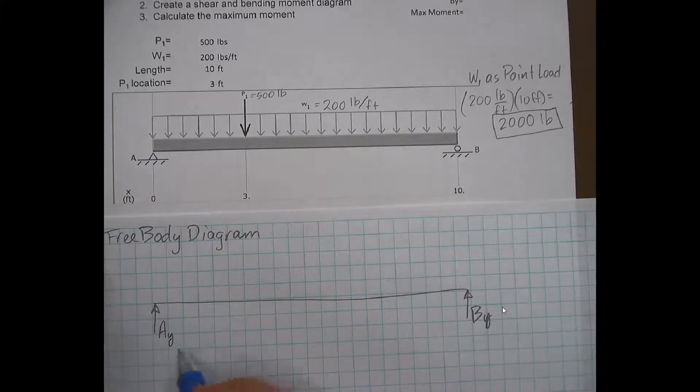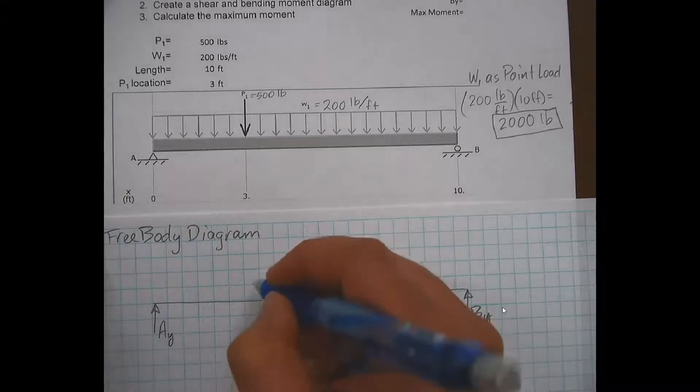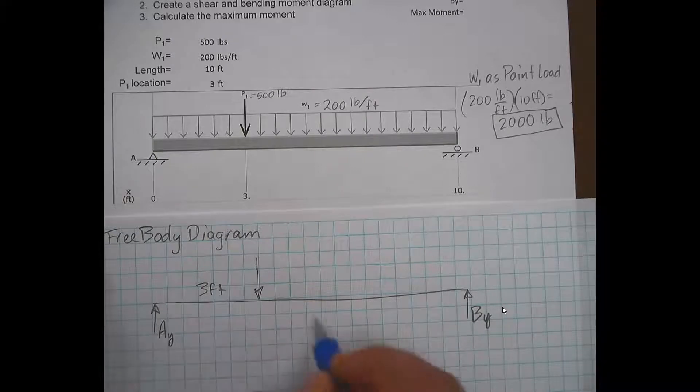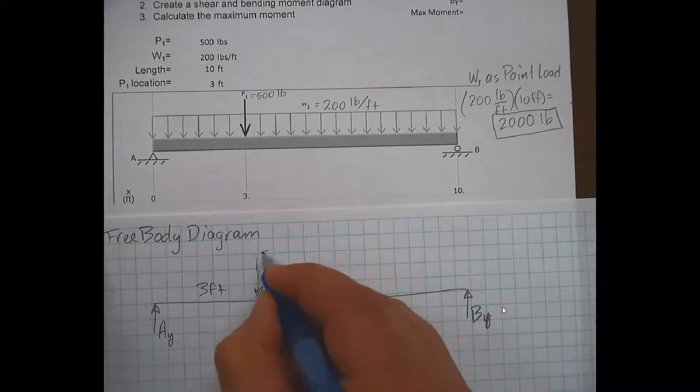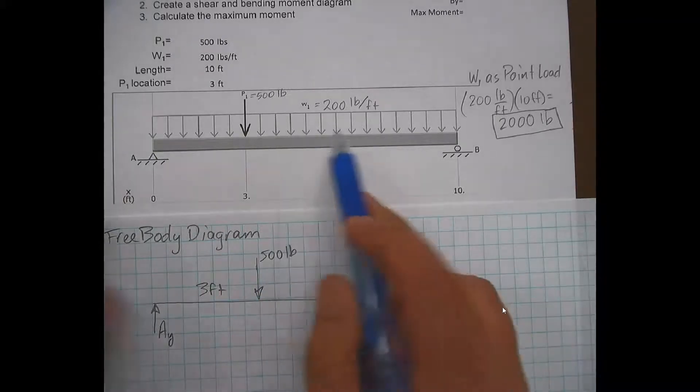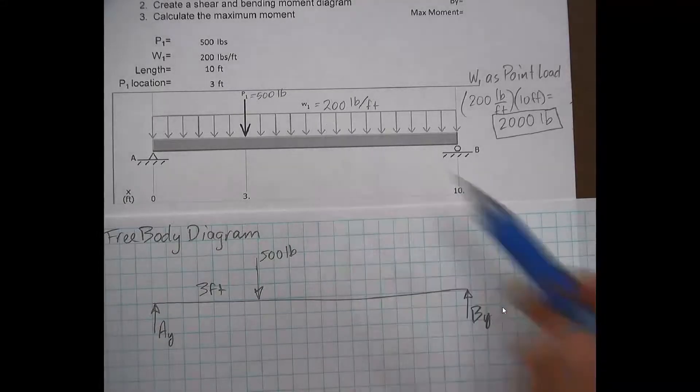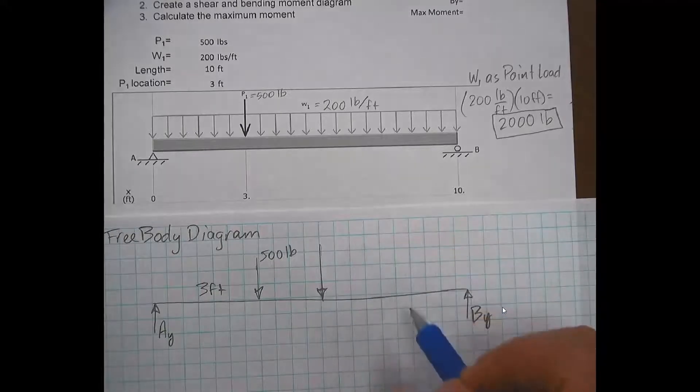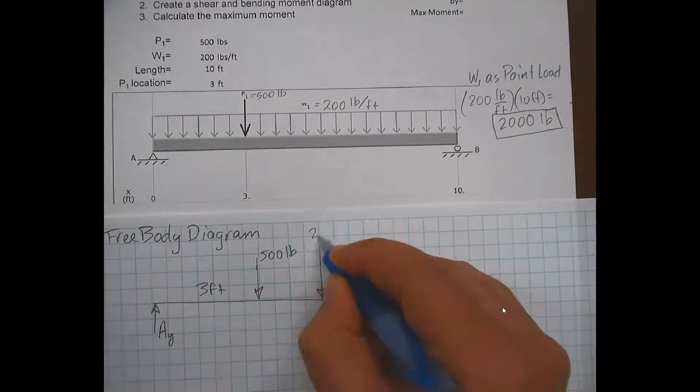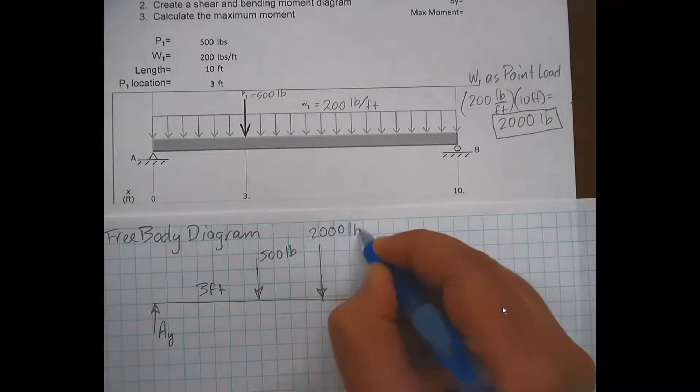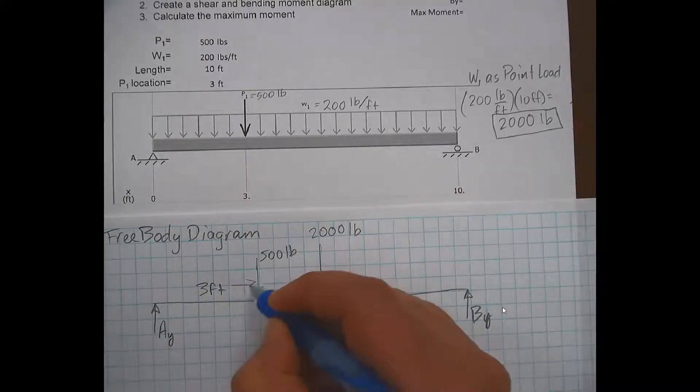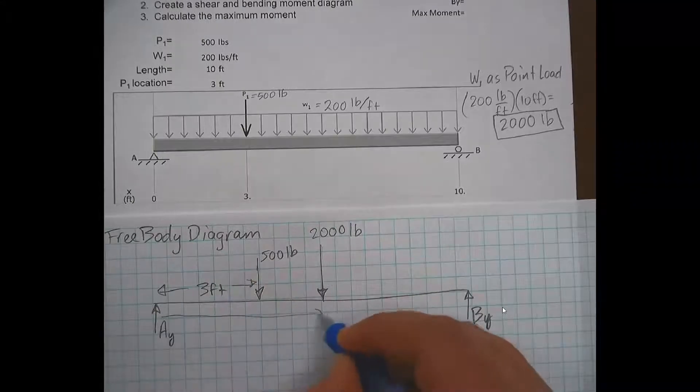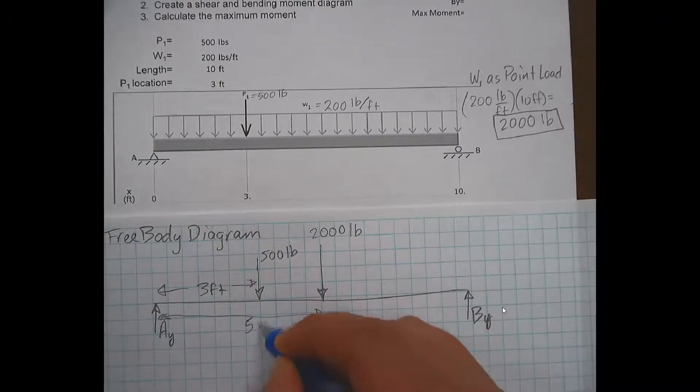Our first point load is at 3 feet, and it's 500 pounds. And then the consolidated distributed load of 200 pounds is going to happen at 5 feet. And so that is the same as if we were to apply a 2,000 pound load in the middle. So this one's three feet in and the other one here is five feet in.